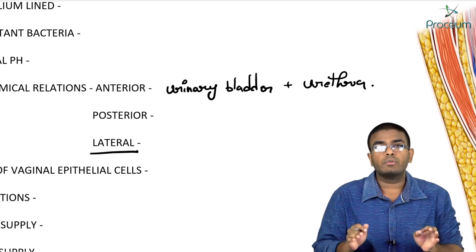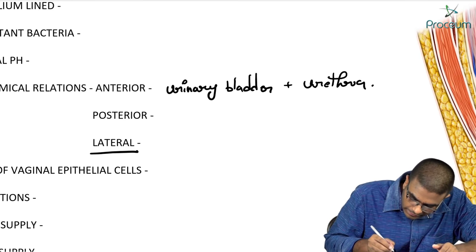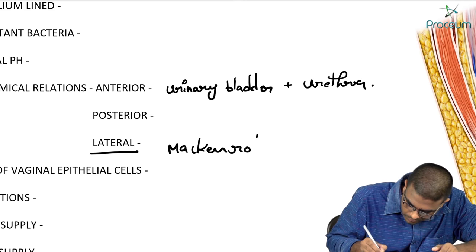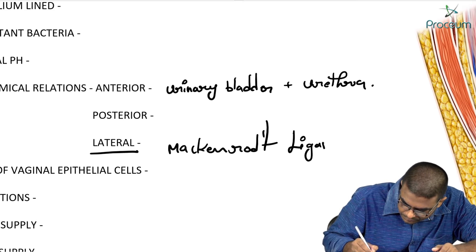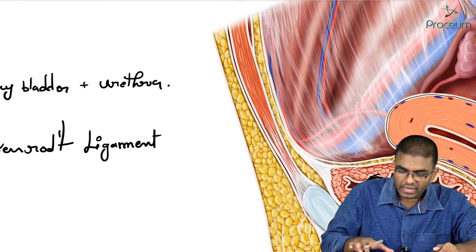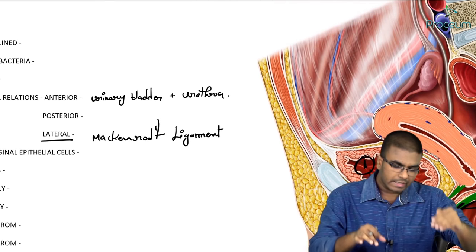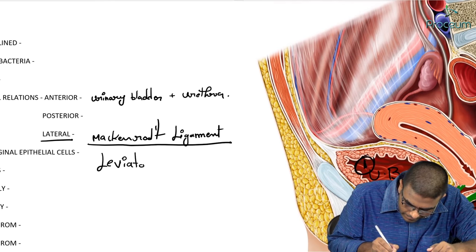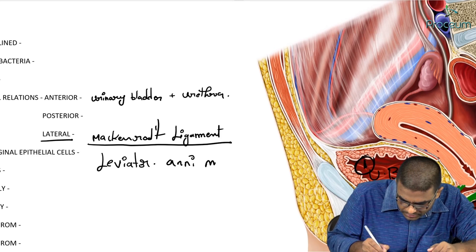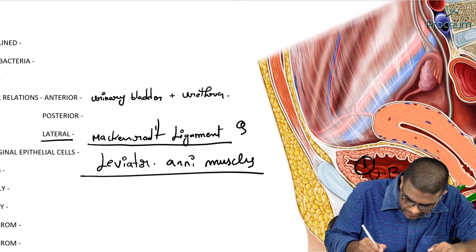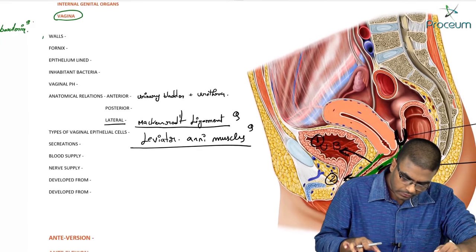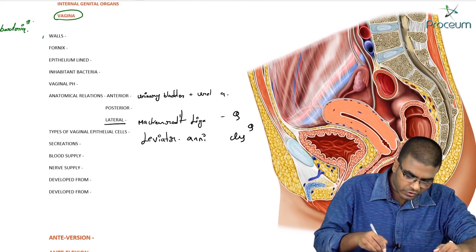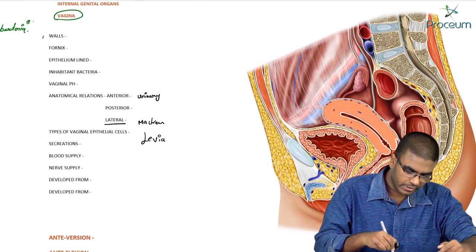Laterally, the vagina is supported by the Mackenrodt's ligament and the levator ani muscles.